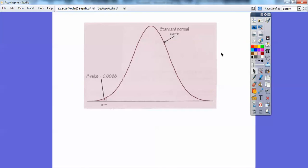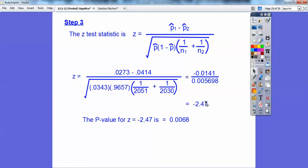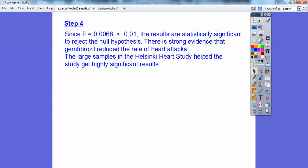If we have a standard curve, remember here is Z equals 0. Over here is Z equals negative 2.47. So if you look at table A in our book, it's in the front of the book, you look up table A and you get the probability to be 0.0068. There's a picture that represents that. And since the P value, the probability is less than 1%, then the results are statistically significant to reject your null hypothesis. There is strong evidence that the drug reduces the rate of heart attack. And the large sample in the Helsinki heart study helped our study get the highly significant results.